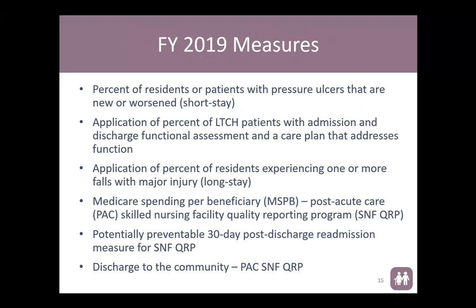For fiscal year 2019, the measures being evaluated include: the percentage of residents or patients with pressure ulcers that are new or worsened — a short stay measure; the percent of long-term care patients with admission and discharge functional assessment and a care plan that addresses function, which is Section GG; the percent of residents experiencing one or more falls with major injury — a long stay measure; Medicare spending per beneficiary for post-acute care skilled nursing facility quality reporting; a potentially preventable 30-day post-discharge readmission measure; and discharge to the community.